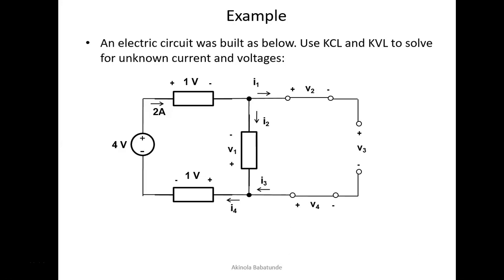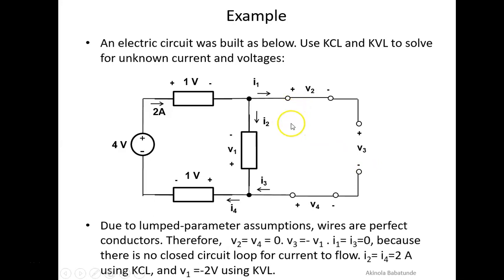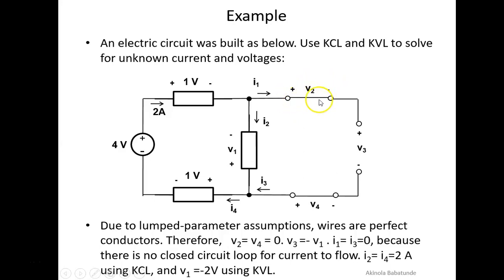We have said that wires are perfect conductors — they do not store charges and they do not store energy. So for V2, since this is a perfect conductor, V2 will be equal to zero because it doesn't store any charges or energy. There is no voltage on this conductor. So V2 equals zero. The same analysis applies to V4 — V4 is also equal to zero.